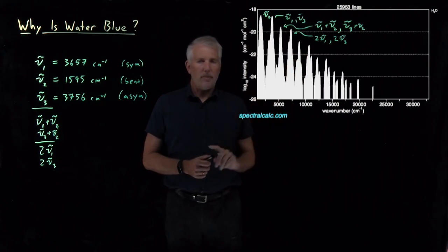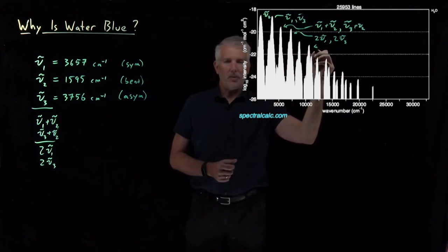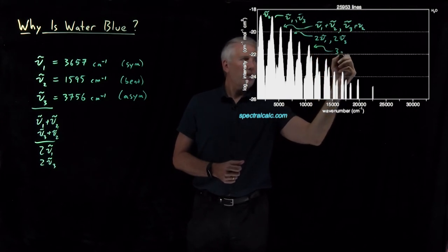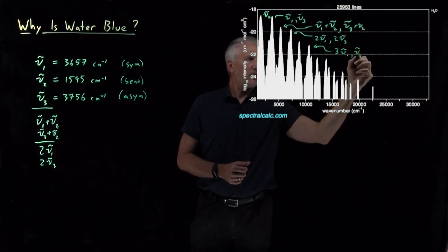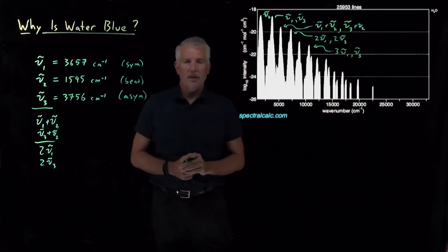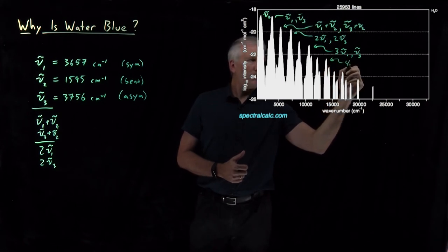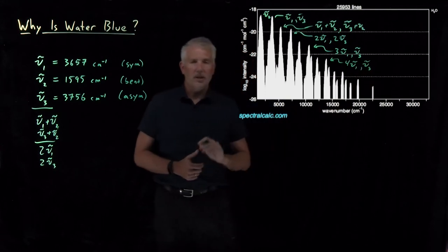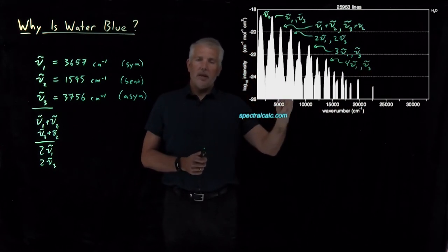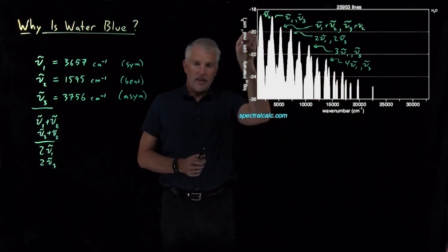But this one here, those would be the second overtones for the symmetric and antisymmetric stretch that show up at three times the fundamental vibrational frequency. Here, we've got four times the fundamental vibrational frequencies for the symmetric and antisymmetric stretch, and so on. So, there's overtones all the way out. The higher the overtone, the less intense the peak is.